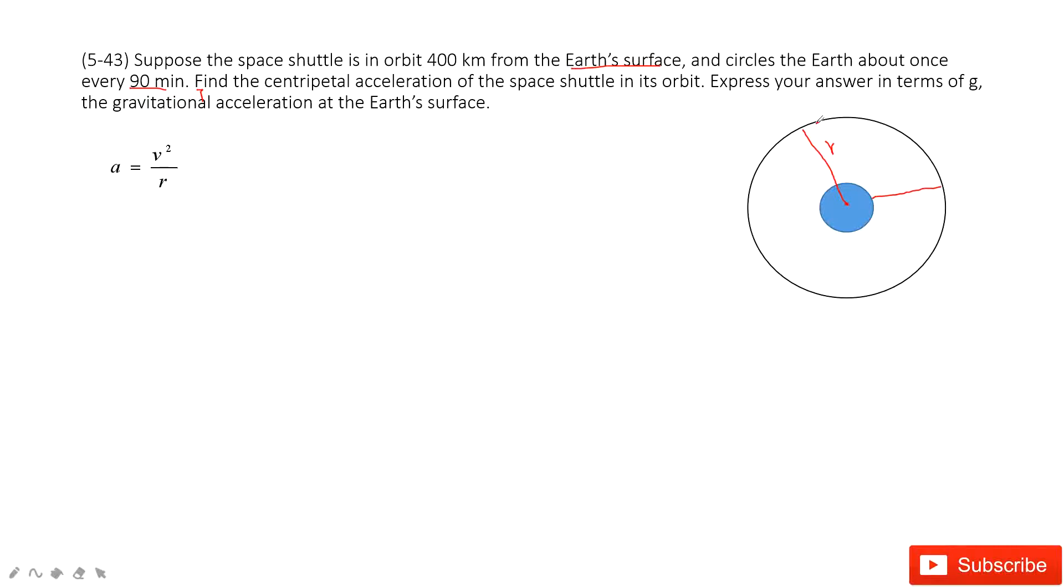Yes, period. So for period, it's the time taken for this shuttle to move one circle. Do you agree? So for one circle, the distance is 2πr. Since the t is given, therefore, you can get velocity. Agree?